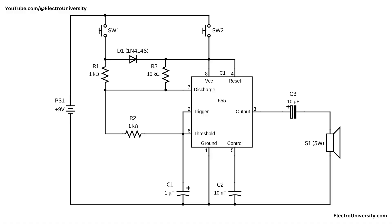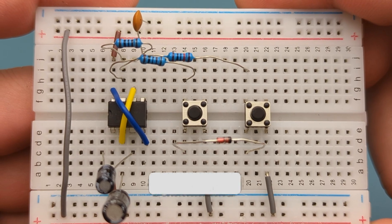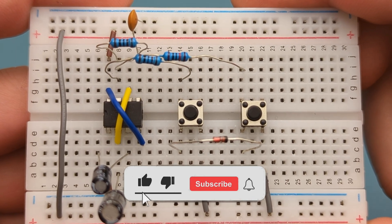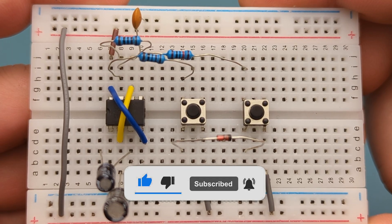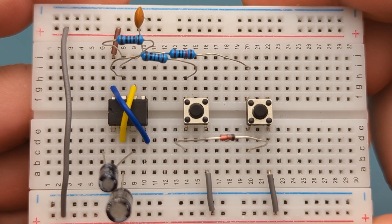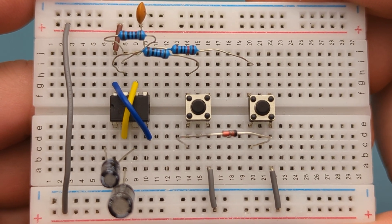I hope this video has shown you how to make a simple doorbell circuit with a 555 timer. If you found this video helpful, give it a thumbs up, consider subscribing for more electronics tips and tutorials, and hit the bell icon to never miss an update. Thanks for watching, and I'll see you in the next video.